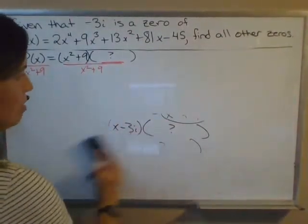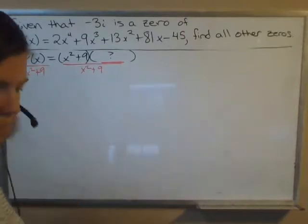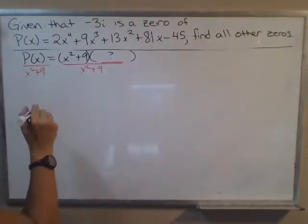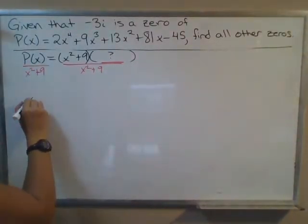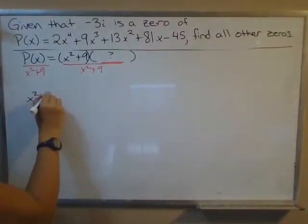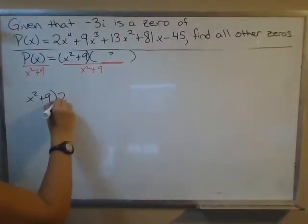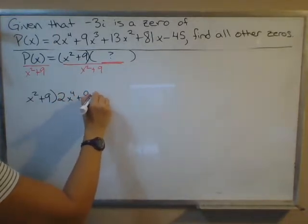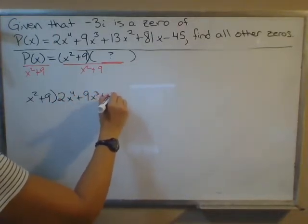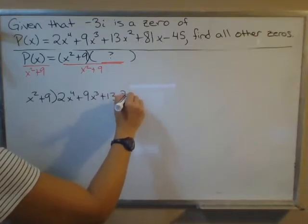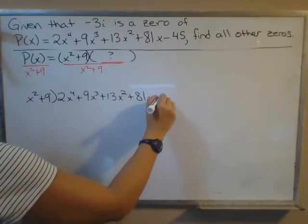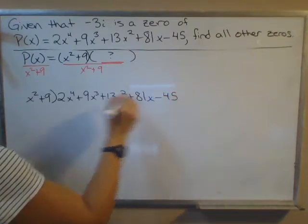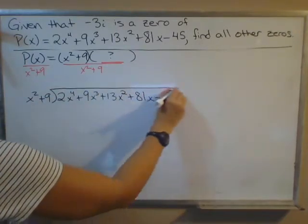So we've got to do some long division. I'll put x^2 + 9 here that's being divided into P(x). Now I've got to copy down this whole long polynomial here. Make sure you do this carefully, because if you get one of these coefficients wrong, it messes everything up.